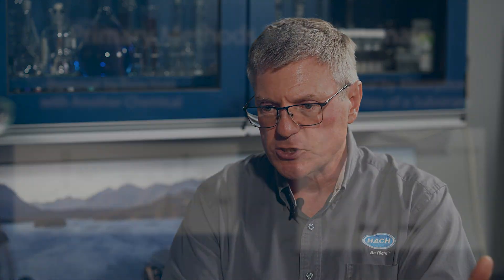So how do customers dechlorinate? What are some of the processes they use? Normally, there are two main processes used for getting rid of chlorine. It's either absorption-based, using the physical-chemical properties of granulated activated carbon (GAC) — sometimes powdered activated carbon, but that's rare, sometimes charcoal or anthracite — but mainly it's GAC, absorption-based. Or chemicals: chemical reduction of chlorine using sulfide-based chemicals such as sodium bisulfite or sodium metabisulfite.